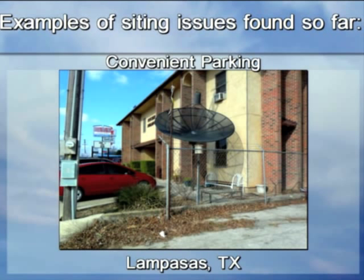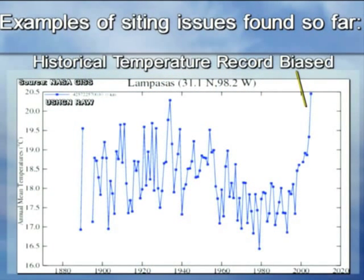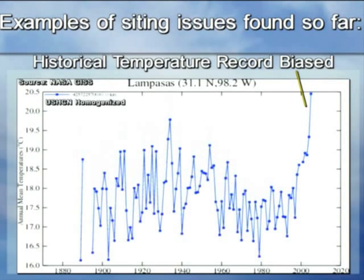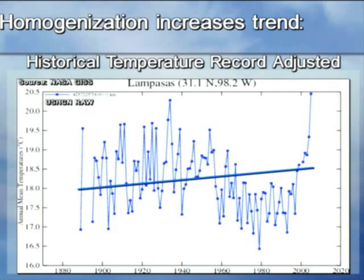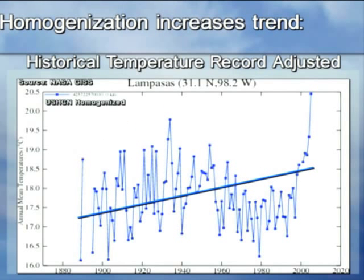Here's another famous one — Lampasas, Texas. It used to be outside of town, but the observer got sick and could no longer do the work, so they moved the station into town right next to the highway. When they moved it, they introduced a tremendous change in the way that station was recording temperature. You can see a huge step function in the graph associated with that station move — it increased the temperature. But the interesting thing is that the homogenization process actually made the problem worse. Instead of removing that step function, they increased the trend by cooling the past with homogenization.